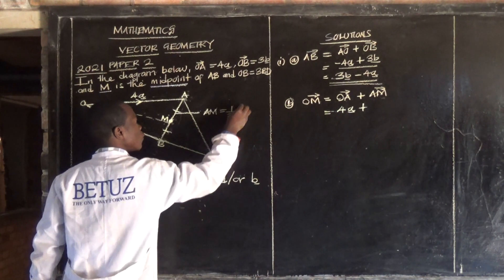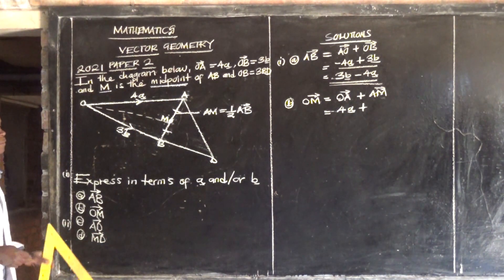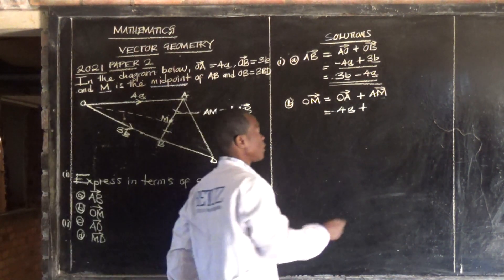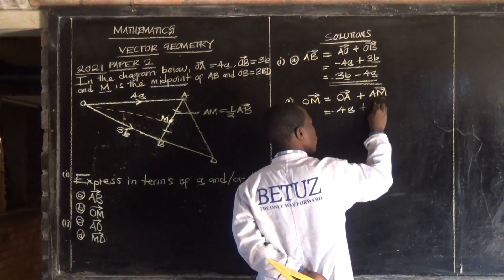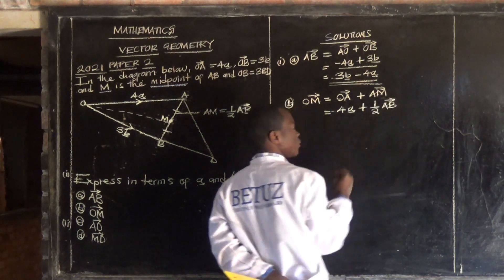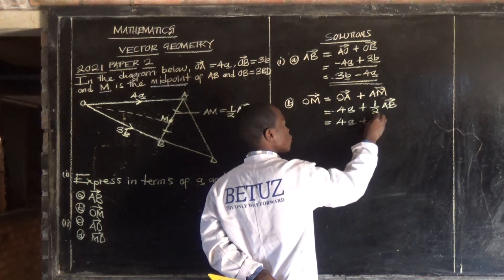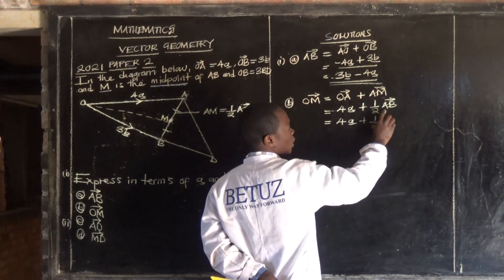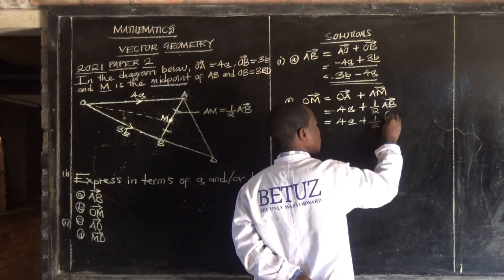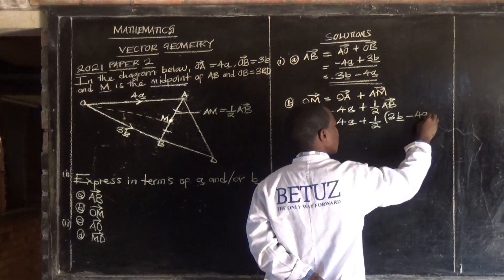AM is one half of AB. So we say 4 vector a plus one over two of AB. What is our vector AB? That is 3 vector b minus 4 vector a.